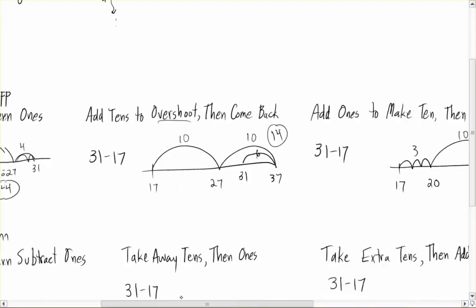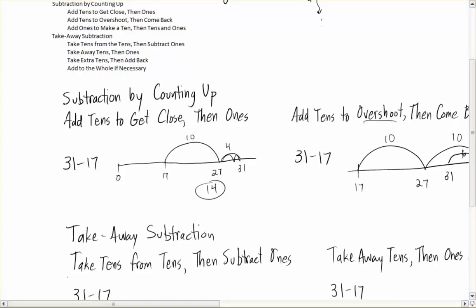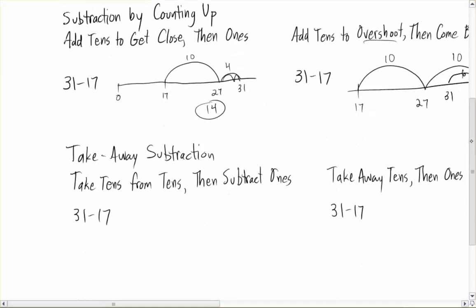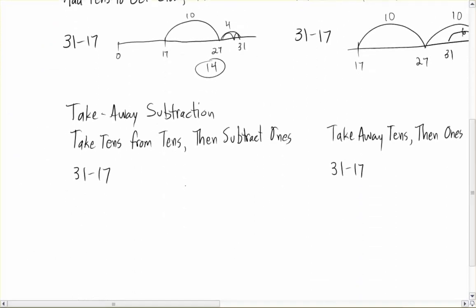So that's the subtraction by counting up strategies. We can also do take away subtraction strategies. Taking tens from tens and subtracting ones works really well when your larger number has more ones than your smaller number. So it's not going to work as well on this one. It's a little bit awkward.